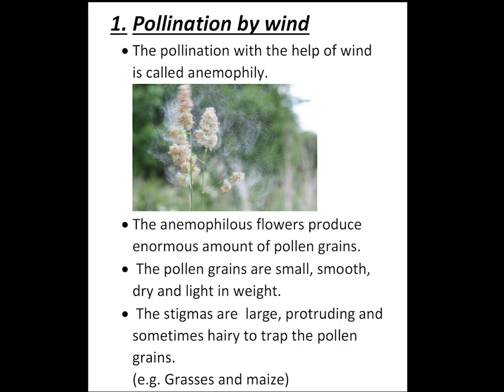What is anemophily? Pollination with the help of wind is called anemophily. What are the adaptations of anemophily flowers? Anemophily flowers produce an enormous amount of pollen grains. The pollen grains are small, smooth, dry and lightweight. Stigmas are comparatively large, protruding and sometimes hairy to trap the pollen grains. Examples are grasses and some cacti. Pollen of such plants can be blown off at a distance of more than 1000 km.